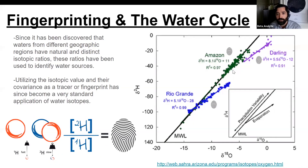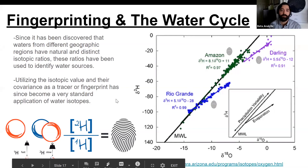Amazon, Rio Grande, Darling. So the point I was getting at is that these are exactly what we mean when we refer to isotopic fingerprints.